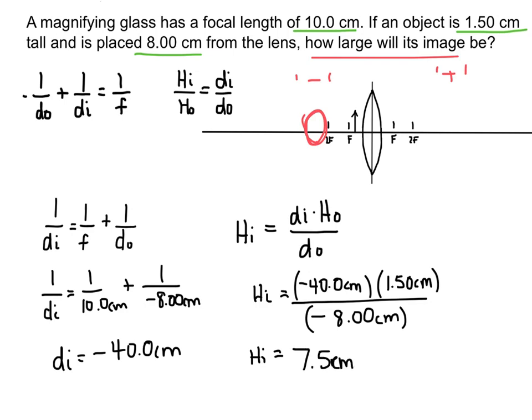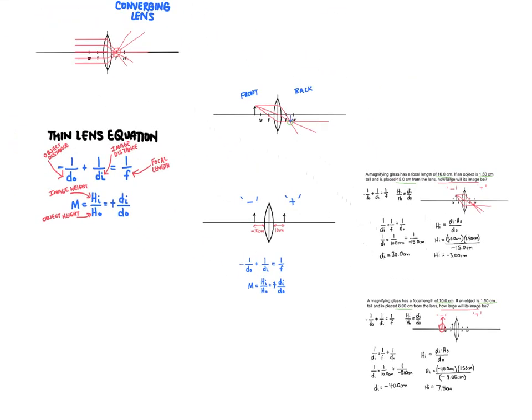We end up with an image height of 7.5 centimeters, and it's positive — so the image is upright. It's going to be quite a bit bigger. So as we're looking through this magnifying glass at the object, we would see this big, large upright image. That's how a magnifying glass works: you want to have the object in between the focal point and the lens itself.